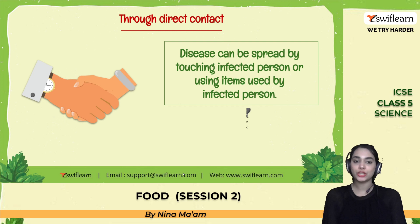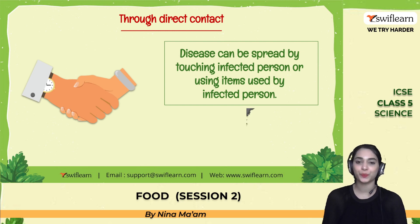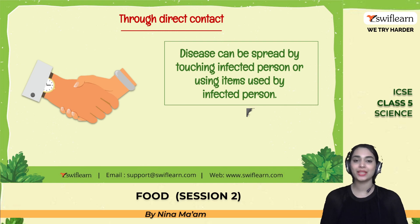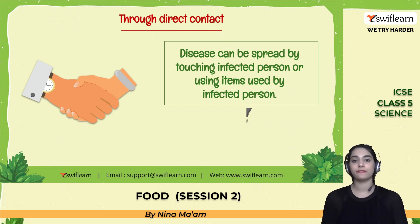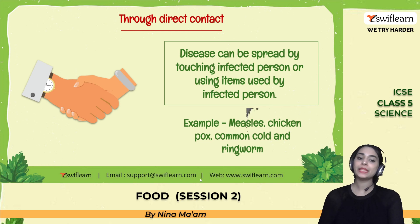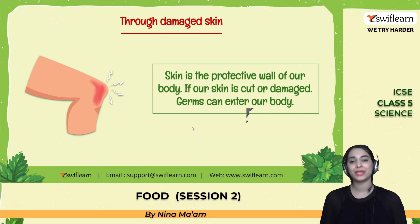Diseases can also spread through direct contact — by touching an infected person or using items used by an infected person. This is why we always wash and sanitize our hands after direct contact with any person, and cover our face with a mask. Examples include measles, chickenpox, common flu, and ringworm.